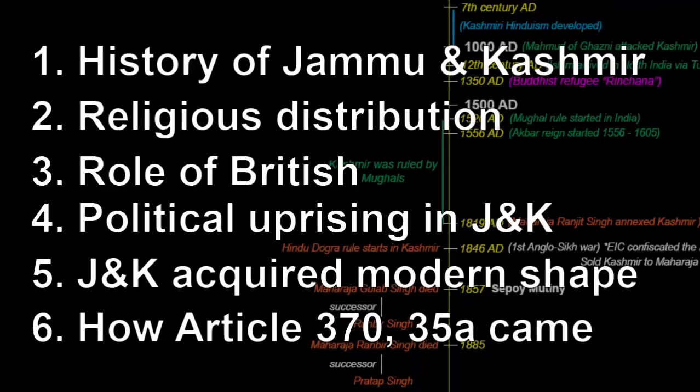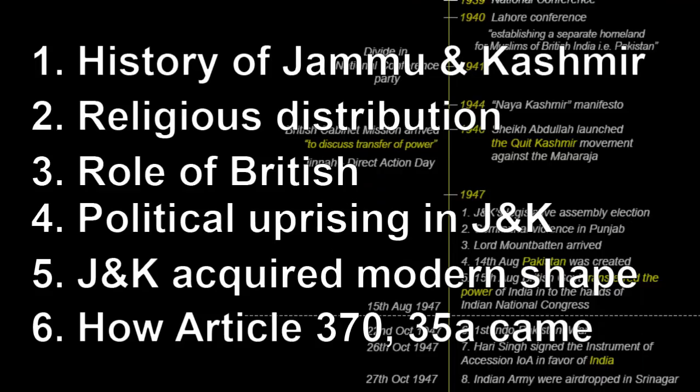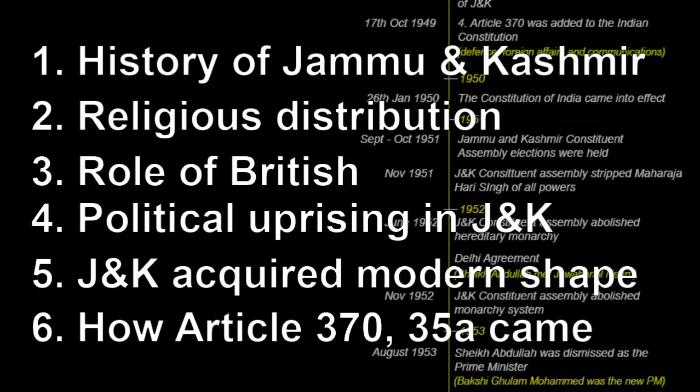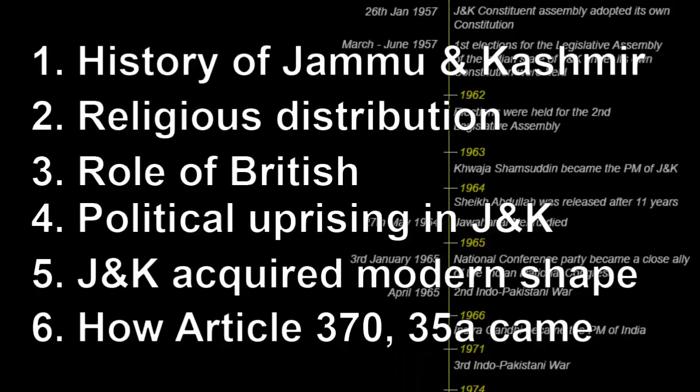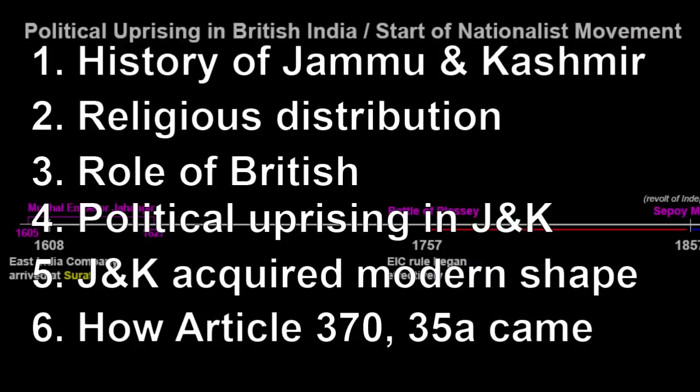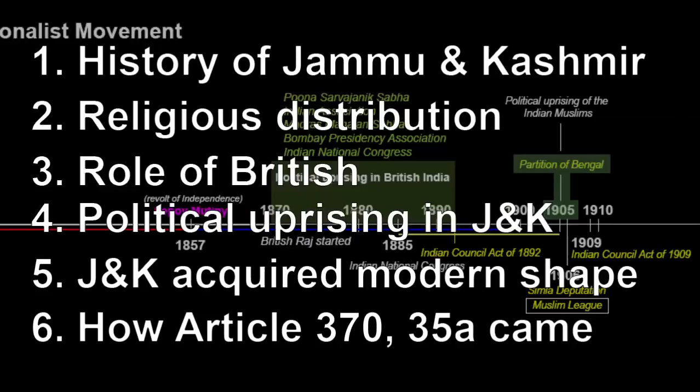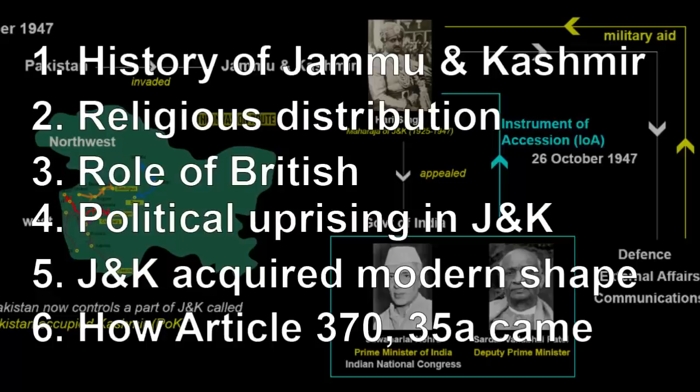In this video, we will learn about the history of Jammu and Kashmir, its religious distribution, what was the role of British, the political uprising in the state, and how it acquired its modern shape and despite all efforts, it did not develop into a fully coherent identity. We will also learn how Article 370 and 35A came into existence. Many of you must be aware that Article 370 gave special status to the state of Jammu and Kashmir, giving the Indian parliament authority only over external affairs, defence, communication and the currency. So sit tight and let's begin.